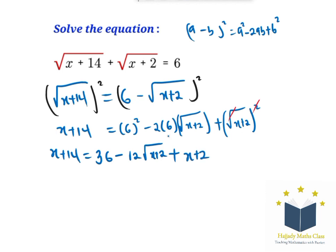Now collecting like terms, the x's cancel out, so I'm going to have 12 root x plus 2 equal 36 plus 2 minus 14, which is going to give me 24.